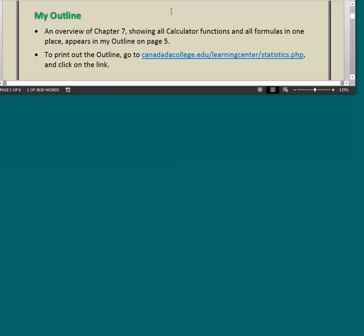And finally, let's talk just very briefly about my outline. An overview of Chapter 7 showing all the calculator functions and all the formulas in one place for Chapter 7. This overview appears in my outline on page 5. To print out the outline, go to this URL and click on the link. I'll show you that right now.